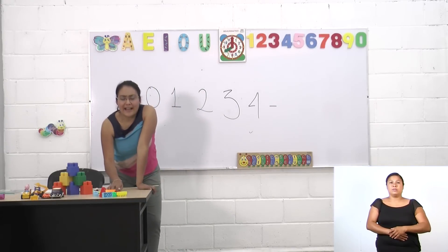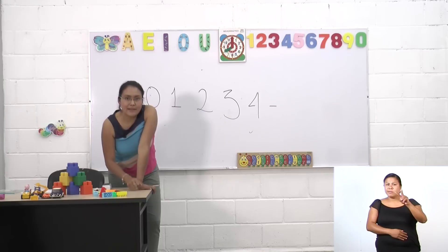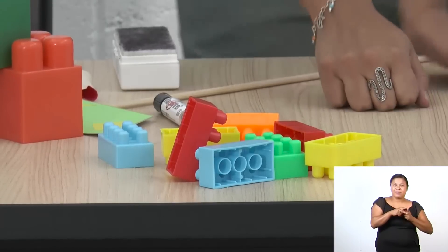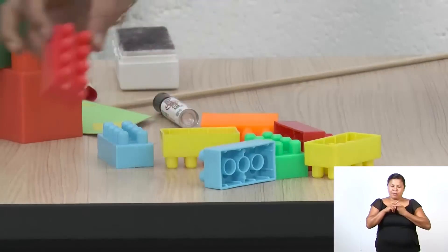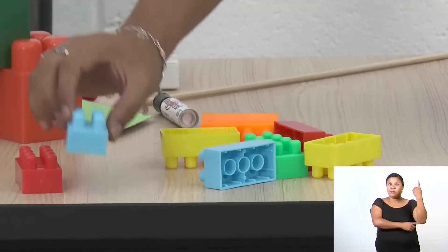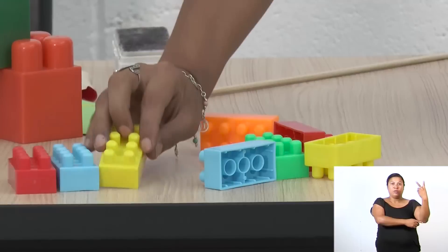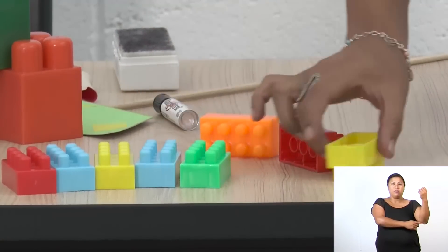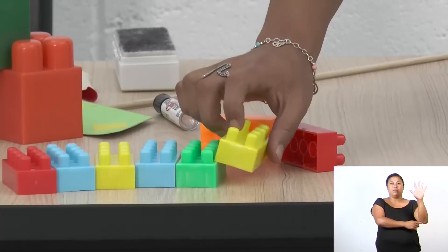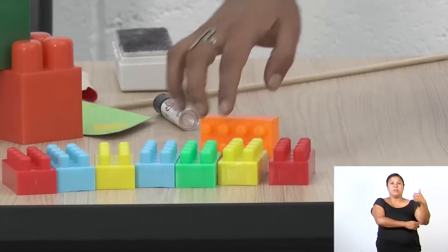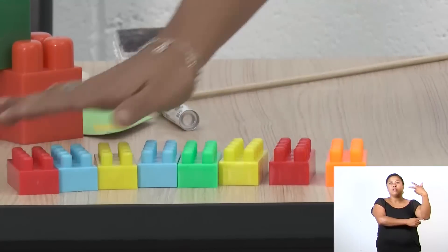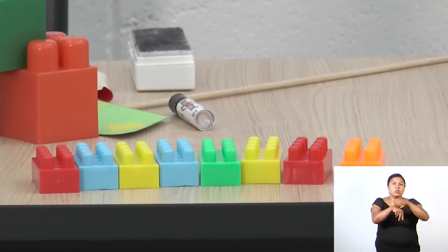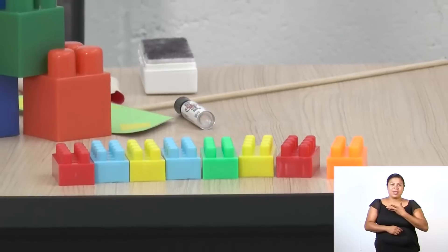Esta de acá tiene más elementos. ¿Me ayudas a contarlos? Iniciaremos: uno, dos, tres, cuatro, cinco, seis, siete, ocho. Esta colección, ¿cuántos elementos tiene? Exacto, tiene ocho elementos.